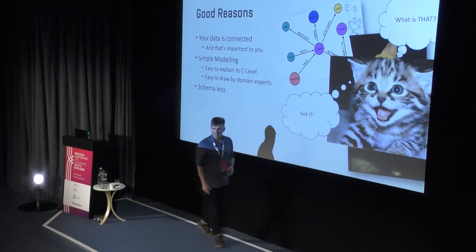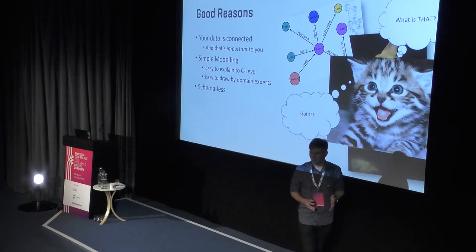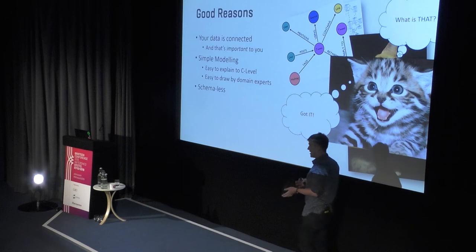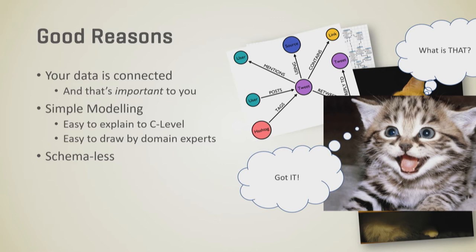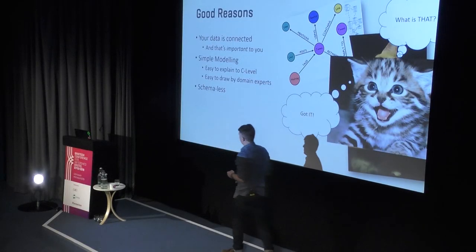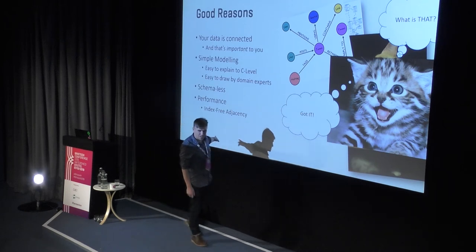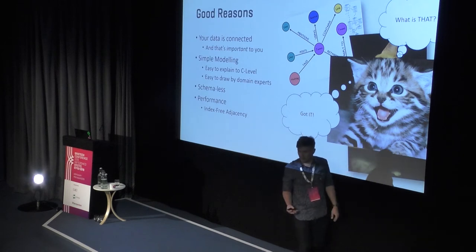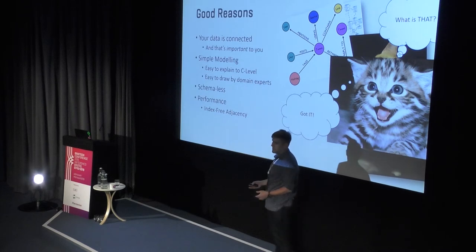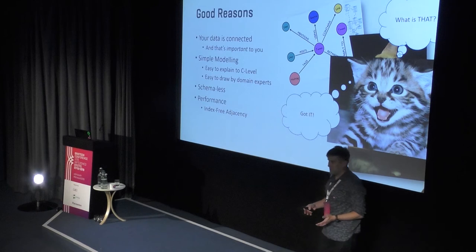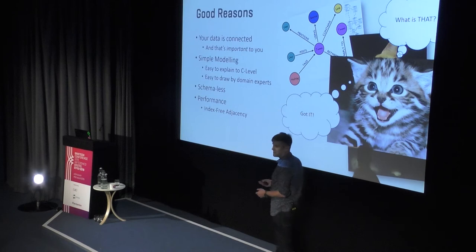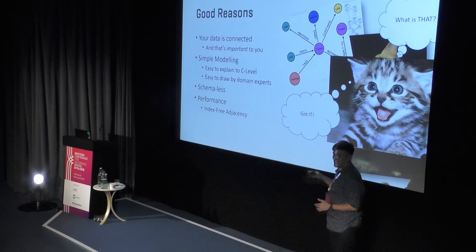Schemaless: not all graph databases are schemaless, but Neo4j is — and that's super useful. It can be a plus or a negative, I'm not going to lie. Some people love it, some hate it. The fact that you don't have to have 256 columns all with nullable values is a benefit. I've been to companies where they've had so many columns it won't render in Management Studio. This is not a problem with graph databases.